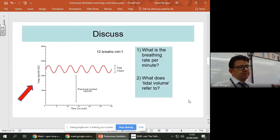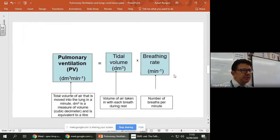Right, so if you know breaths per minute and you know the tidal volume, you can then work out pulmonary ventilation. So to work out pulmonary ventilation, you would use this equation. So PV equals tidal volume times the breathing rate.